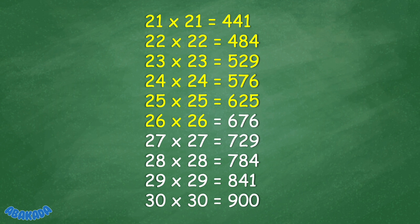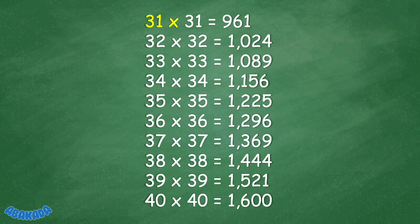26 times 26 equals 676. 27 times 27 equals 729. 28 times 28 equals 784. 29 times 29 equals 841. 30 times 30 equals 900. 31 times 31 equals 961. 32 times 32 equals 1,024.